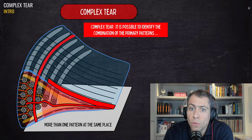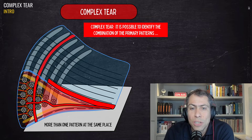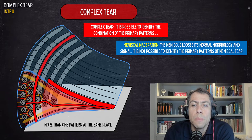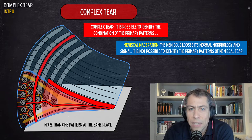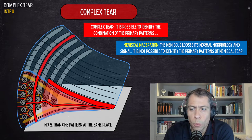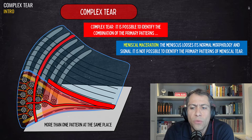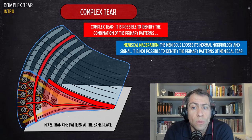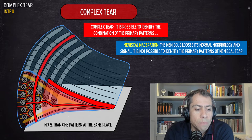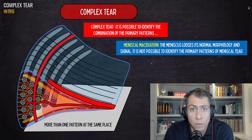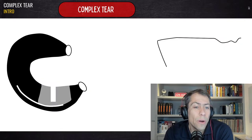That definition is very useful to make a distinction between the complex tear and meniscal maceration. In the case of meniscal maceration, the meniscus loses its normal morphology and signal, and it's not possible to identify the primary patterns of meniscal tear in a specific meniscal region.